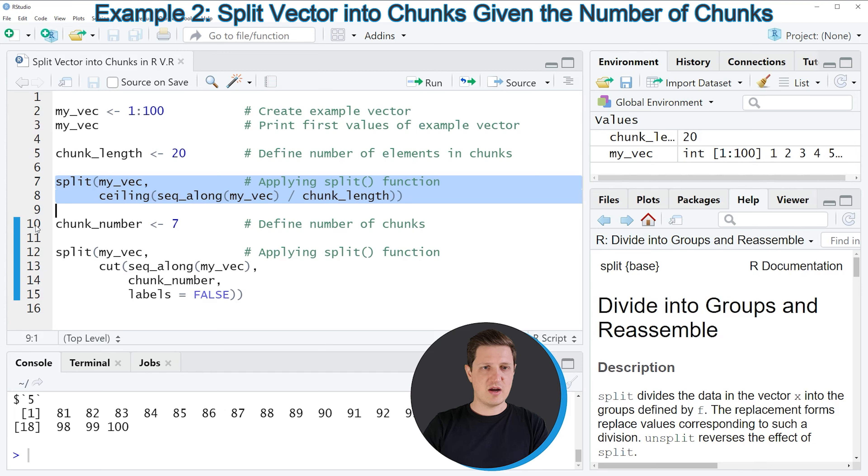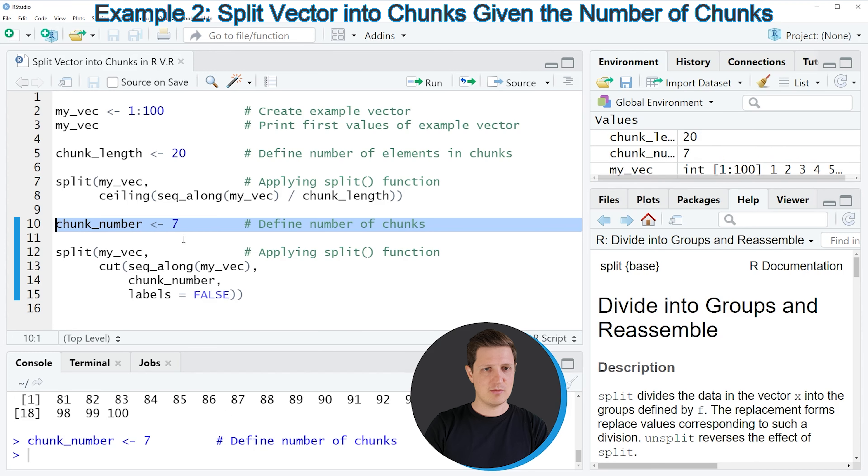First, we need to define the number of chunks that we want to create. In this example, we are using a number of seven chunks. We need to define this number in a data object, as you can see in line 10 of the code. After running this line, we have created another data object at the top right of RStudio, which is called chunk_number.